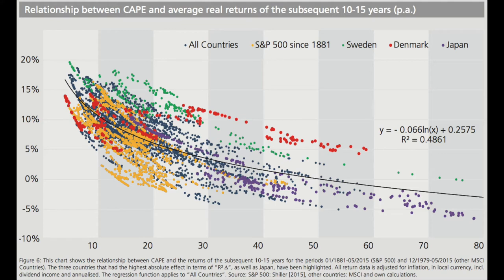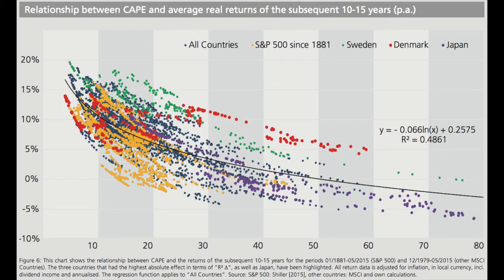What's also very significant is to look at average returns in relation to the CAPE ratio. In this chart, covering all countries since 1881, you can see how the lower the CAPE ratio, the higher the 15-year returns. When the CAPE ratio is below 10, global returns on stocks have always been higher than 5% and even went to 20% over the next 15 years. The blue dots are from all countries, the green dots are from the S&P 500, and never in history have returns been higher than 5% per year when the CAPE ratio was higher than 20%.